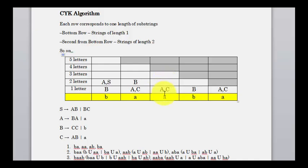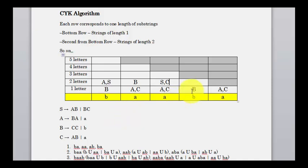Next, AB is generated by S and also by C. CB is generated by none. Then for BA, it is generated by A, and BC is generated by S — so we get A and S.